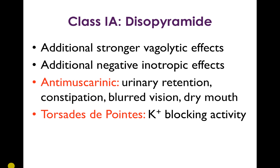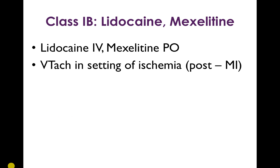The third class 1a drug to know about is disopyramide, which has quite strong vagolytic effects and, independently of its sodium channel blocking, has negative inotropic effects. Its vagolytic effects lead to urinary retention, constipation, blurred vision, and dry mouth. And again, due to QT prolongation, it can lead to torsades.